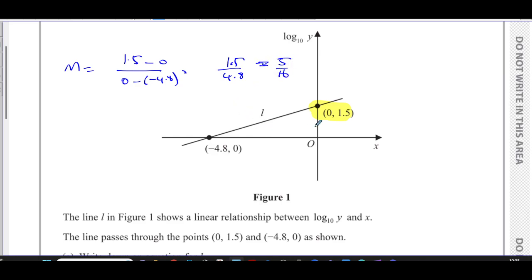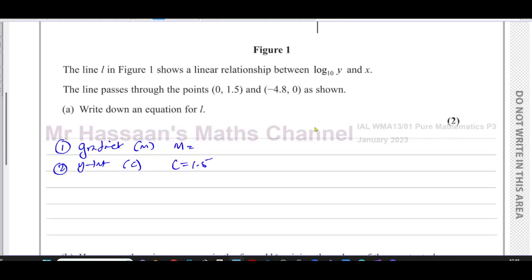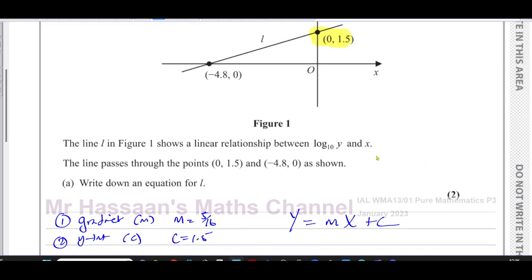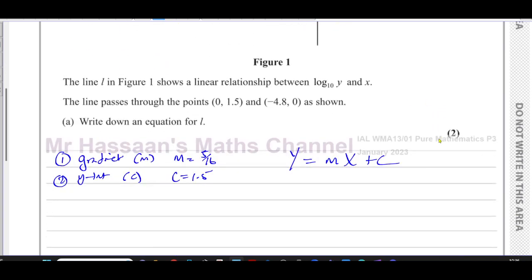So that's the gradient of this line, 5 over 16. So we can write down the equation of the straight line now. The equation of a straight line is y equals mx plus c. Because our y-axis is log to the base 10 y, this is going to be log to the base 10 y equals 5 over 16 times x plus 1.5. This is the equation of this straight line, and that's the answer to part a of this question.